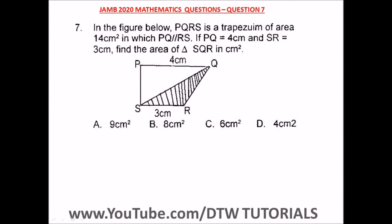In question number 7 of the JAMB 2020, the figure below shows PQRS is a trapezium of area 14 cm² in which line PQ is parallel to line RS. If PQ is 4 cm and SR is 3 cm, find the area of triangle SQR in cm².